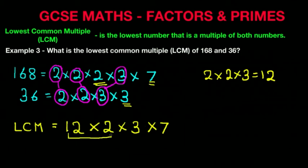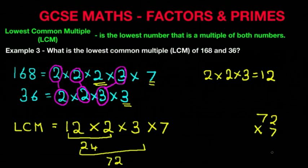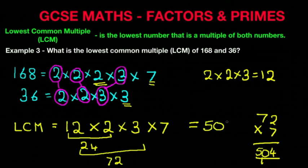So the lowest common multiple is 12 times 2 times 3 times 7. We can work this out: 12 times 2 is 24, then 24 times 3 is 72. I'm going to work out the last one because I can't do that in my head — 72 times 7 is 504. Therefore, the lowest common multiple of 168 and 36 is 504.